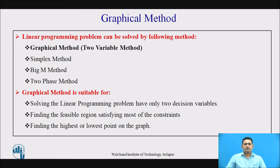The graphical method is suitable for solving linear programming problems having only two decision variables, as it is solved by the graphical method which has only two axes — x-axis and y-axis. It is suitable to find out the feasible region satisfying all the constraints, which helps us find the highest or lowest points according to the case to define the optimum solution for the problem.